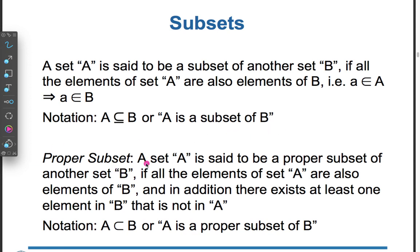Proper subset: A set A is said to be a proper subset of another set B if all the elements of set A are also elements of B, and in addition, there exists at least one element in B that is not in A. Notation: A ⊂ B.